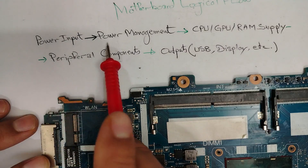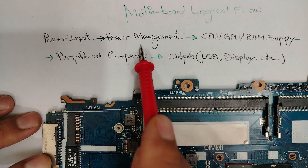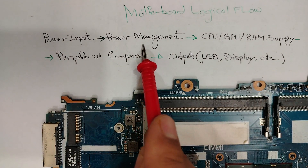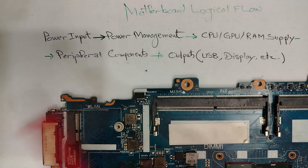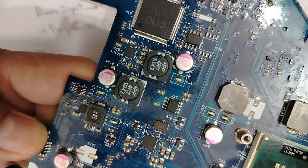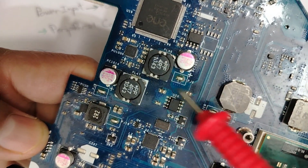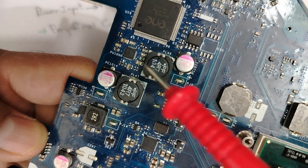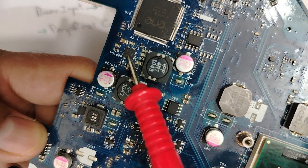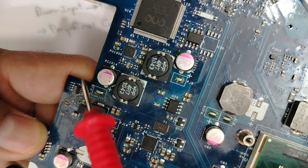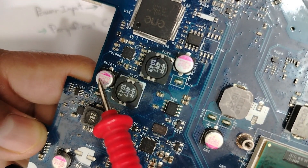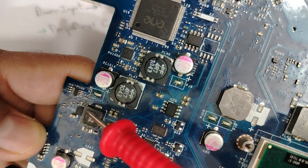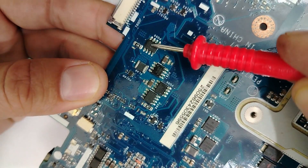After power input, we have power management — meaning the standby voltages present on the motherboard once you connect the adapter without pressing the power button, like 3V always and 5V always. For power management, you will always find two duplicated channels: one for 3V and one for 5V. Each channel has an inductor, electrolytic capacitor, and two MOSFETs.